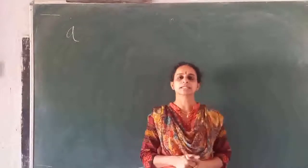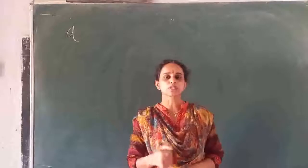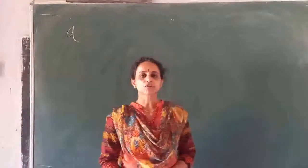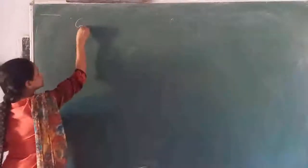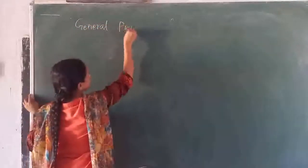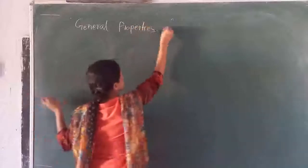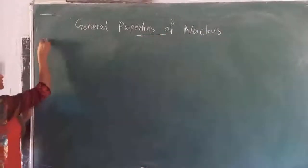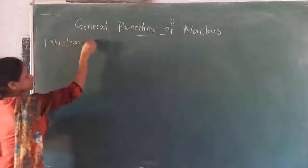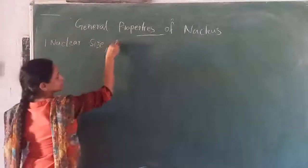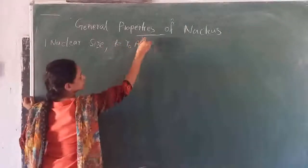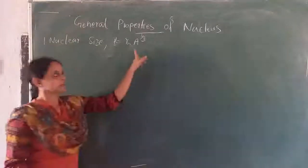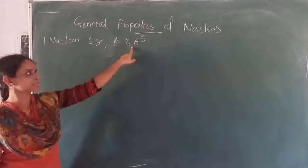The radius of the nucleus is given by R = R₀ × A^(1/3), where R₀ = 1.3 femtometres. This is the radius of the nucleus. Here A is the mass number of the nucleus, that is the number of protons plus the number of neutrons.